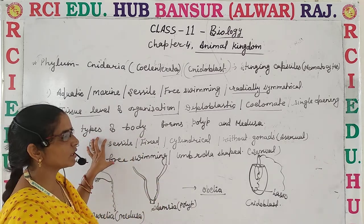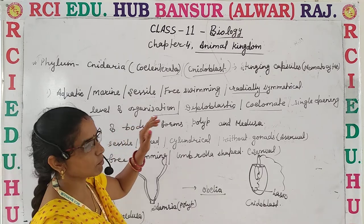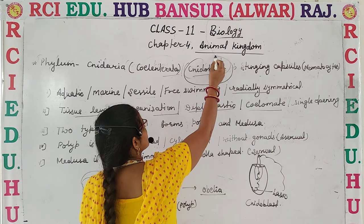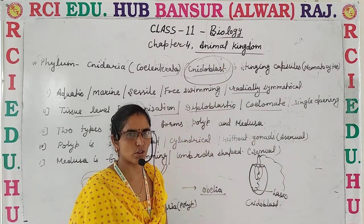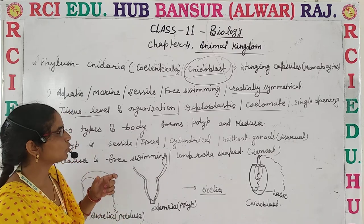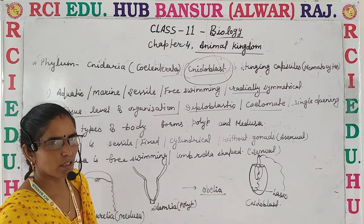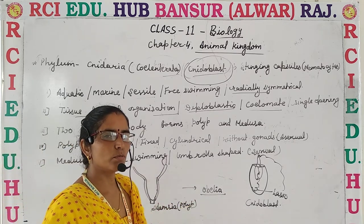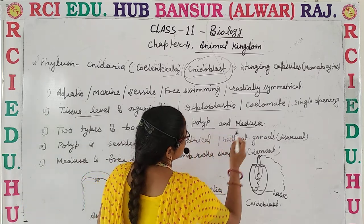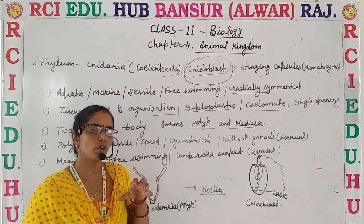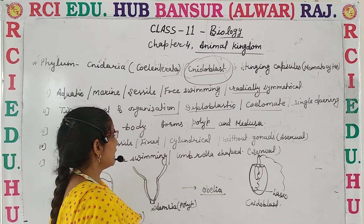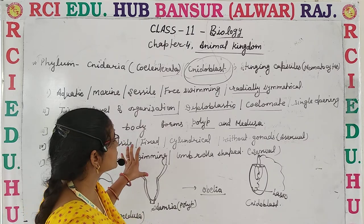Now let's talk about the peculiar features. We have already discussed one peculiar feature: Cnidoblast cells are called Stinging Cells. Another peculiar feature is that there are two types of body forms — Polyp and Medusa. These two body forms are especially present in Cnidaria.